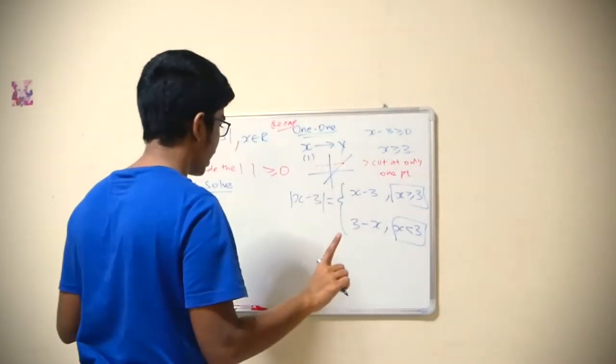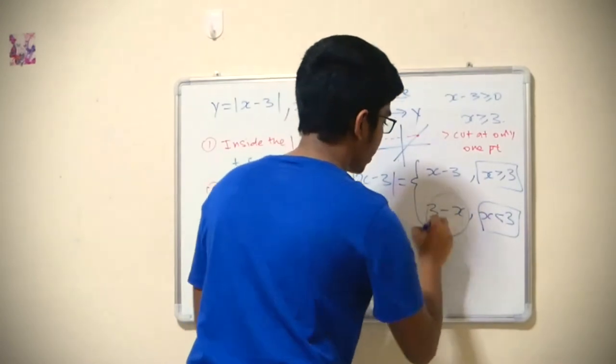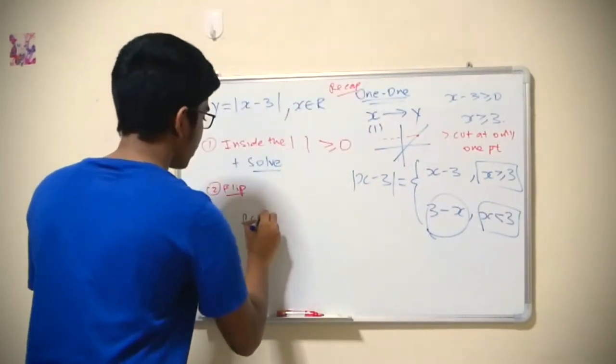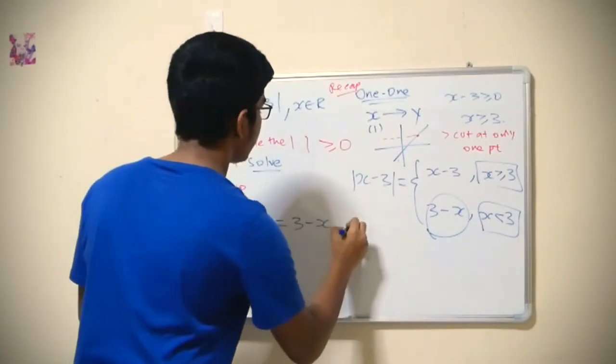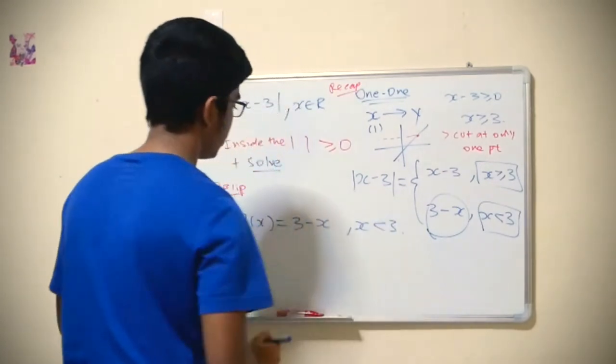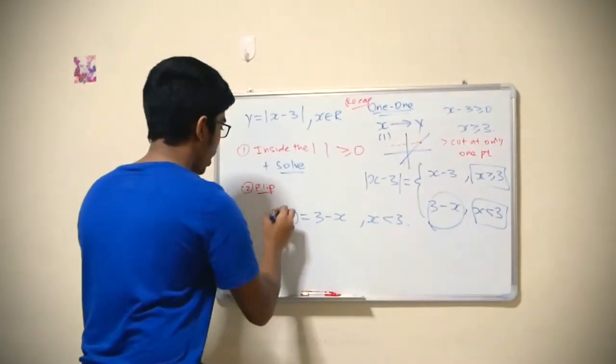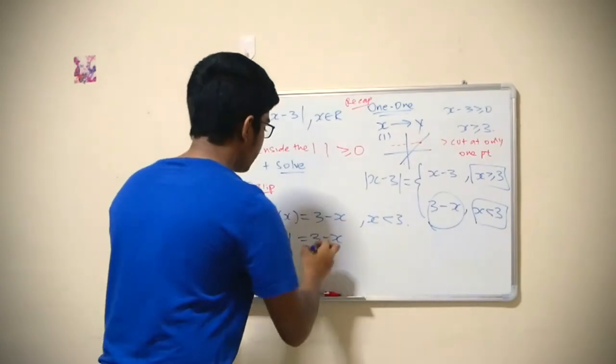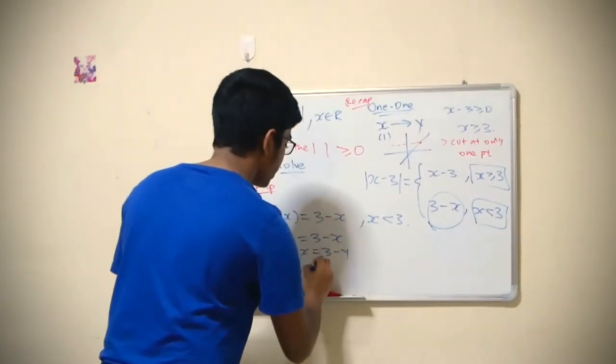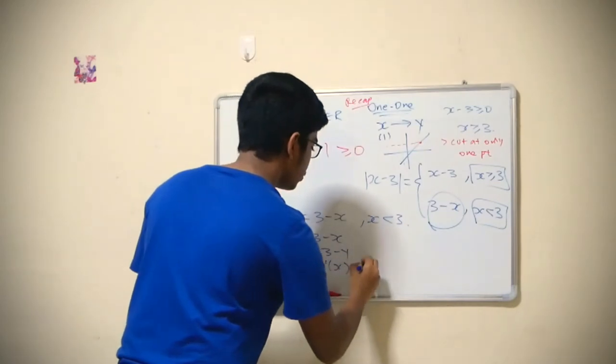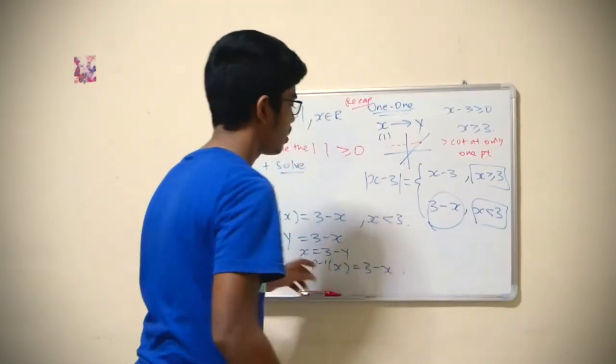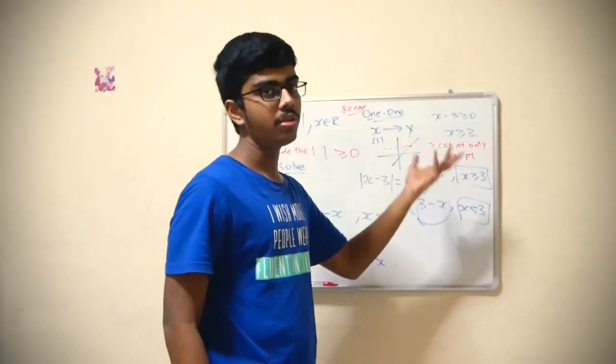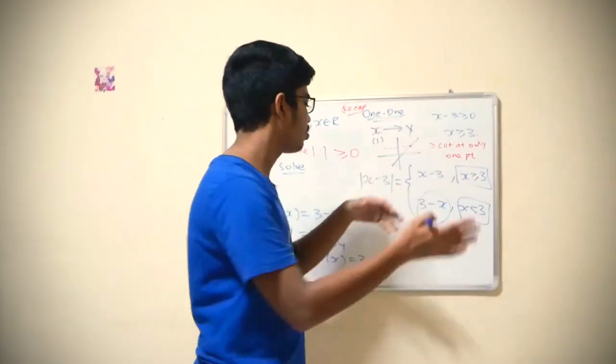So if they give you, say, x should be smaller than 3, you define the function like that. Then you solve it: f(x) equals 3 minus x for x smaller than 3. Then you just solve it: replace with y equals 3 minus x, switch the places, so f inverse of x equals 3 minus x. What is the domain of an inverse function? It's the range of the original function.